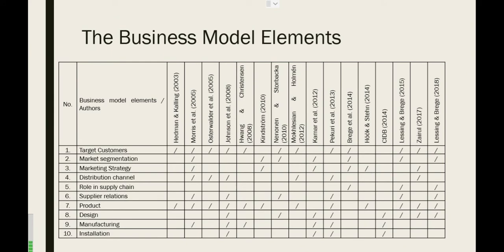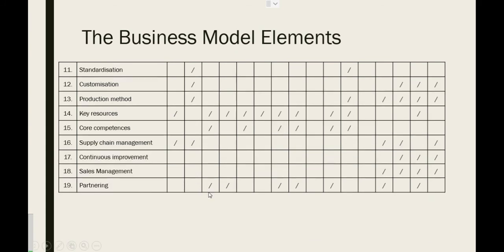Based on a parallel review of 16 papers in the area of building business models, 19 business model elements were identified to be important to IBS business. They are: target customers, market segmentation, marketing strategy, distribution channel, role in supply chain, supplier relation, product, design, manufacturing, installation, standardization, customization, production method, key resources, core competencies, supply chain management, continuous improvement, sales management, and partnering.